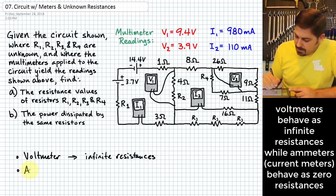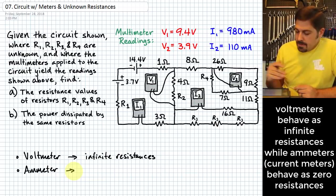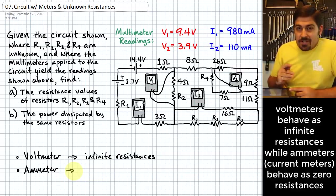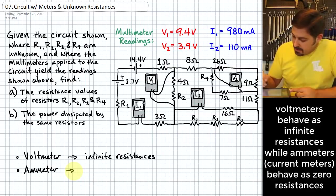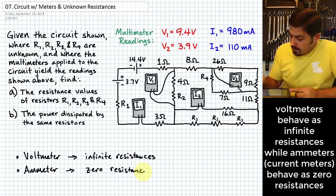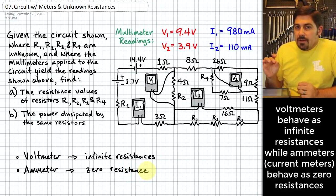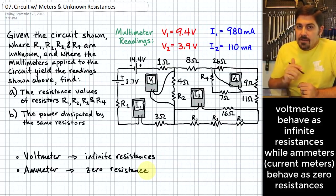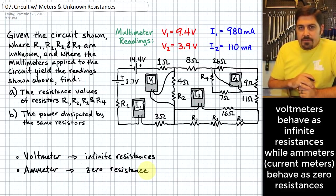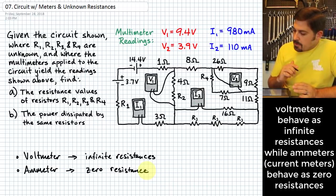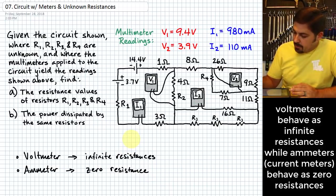For an ammeter — the term we use for something that measures current — it's actually on the exact opposite end of that spectrum: basically zero resistance. What that means is that we pretend like it's not there. We pretend the current can go right through that ammeter and it has no effect, no resistance added because the ammeter is in place. Those are the two things we'll need whenever we look at this circuit.